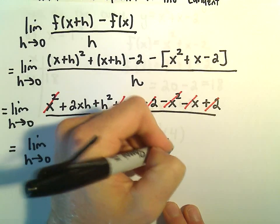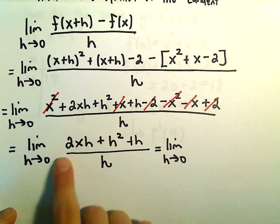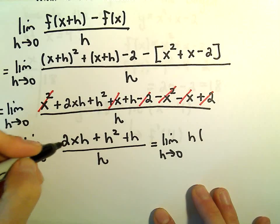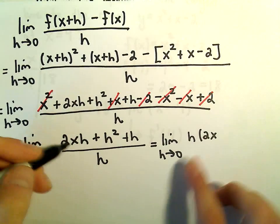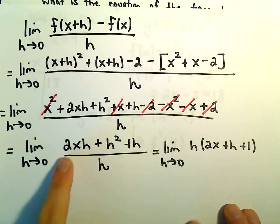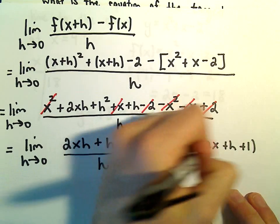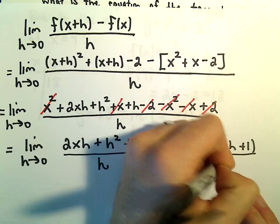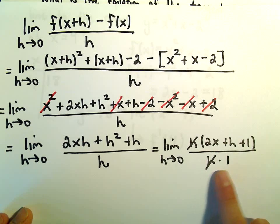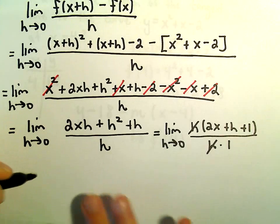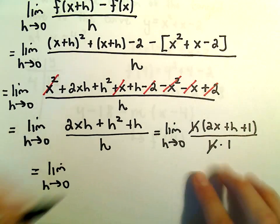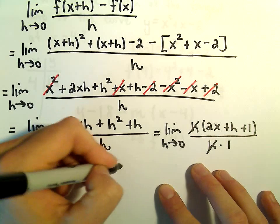And at this point, we can factor an h out of the numerator and cancel that out with the h in the denominator. So if we pull the h out, h times 2x would give us 2xh. H times h would give us h squared. And then h times positive 1, when we distribute, will give us our positive h. All over h. So if we cancel out the h's, we're just left with the limit as h approaches 0, of the quantity 2x plus h plus 1.